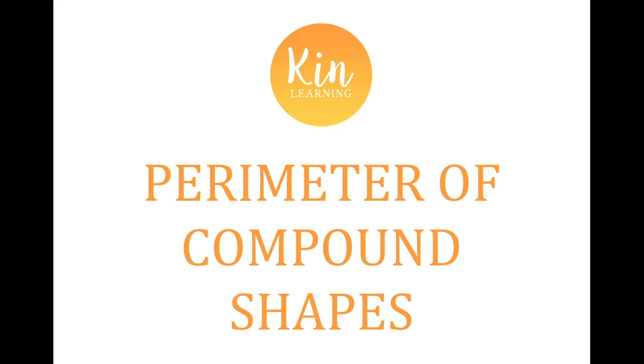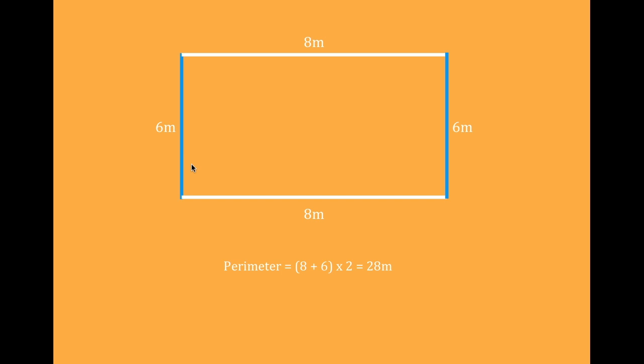First of all we're going to refresh our memories by reviewing how to find the perimeter of a single rectangle. Remember perimeter is the distance all the way around the outside of the shape. So we can find the perimeter of a rectangle by adding up all of the sides.